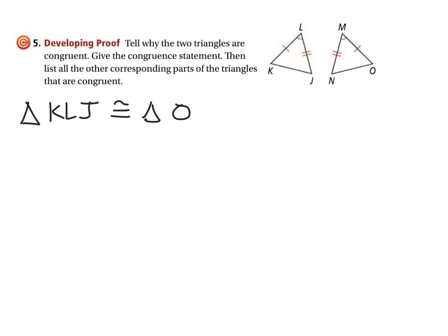And so we'll list those as triangle O, and then what corresponds with L? L is that marked angle at the top, so M corresponds with that, and then going down through the side with the second segment marks to N. And you could have named that in any way, as long as what you have is K corresponding with O, L corresponding with M, and J corresponding with N. So we've got KLJ and triangle OMN.